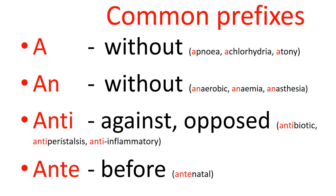Anti-peristalsis — peristalsis in the gastrointestinal tract will propel things from the direction of the mouth to the direction of the anus. Normally when we swallow there are peristaltic waves going from the mouth down the esophagus towards the stomach. But if there's anti-peristalsis that will be going in the opposite direction, as might occur in vomiting where there is regurgitation against the normal physiological direction.